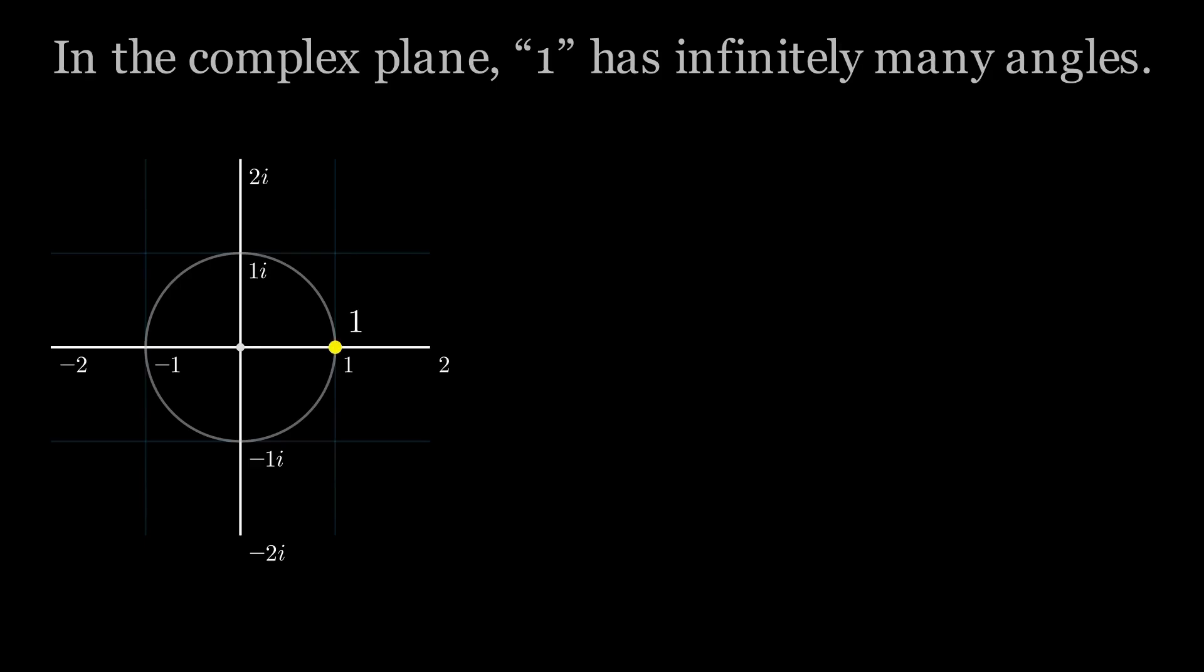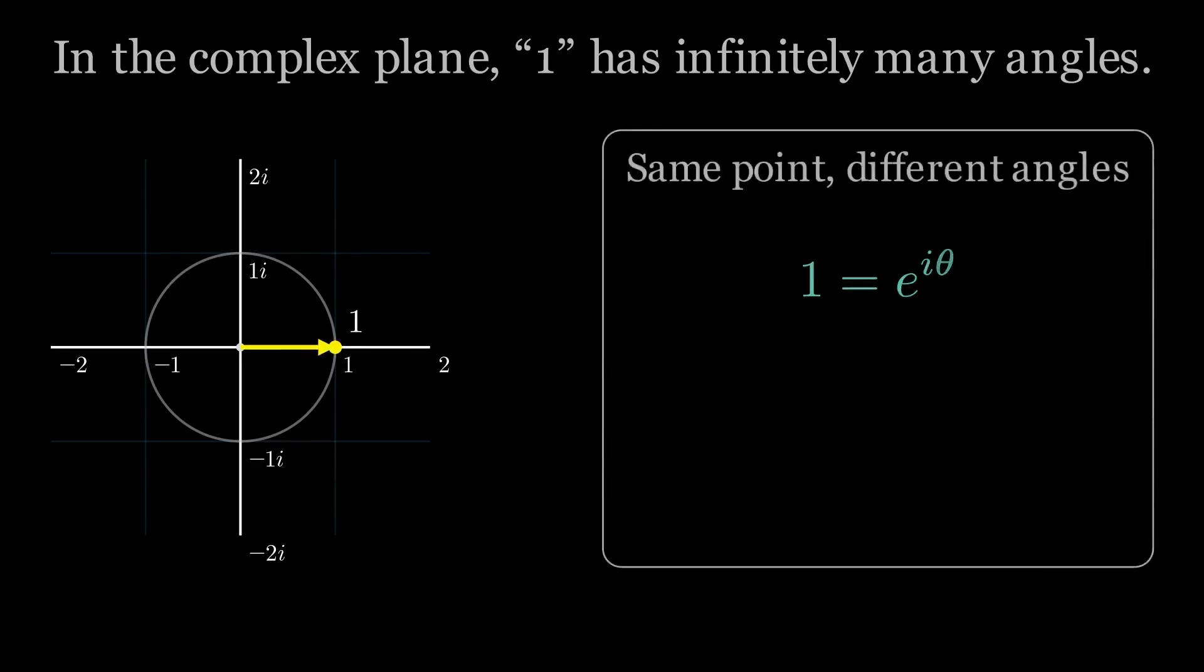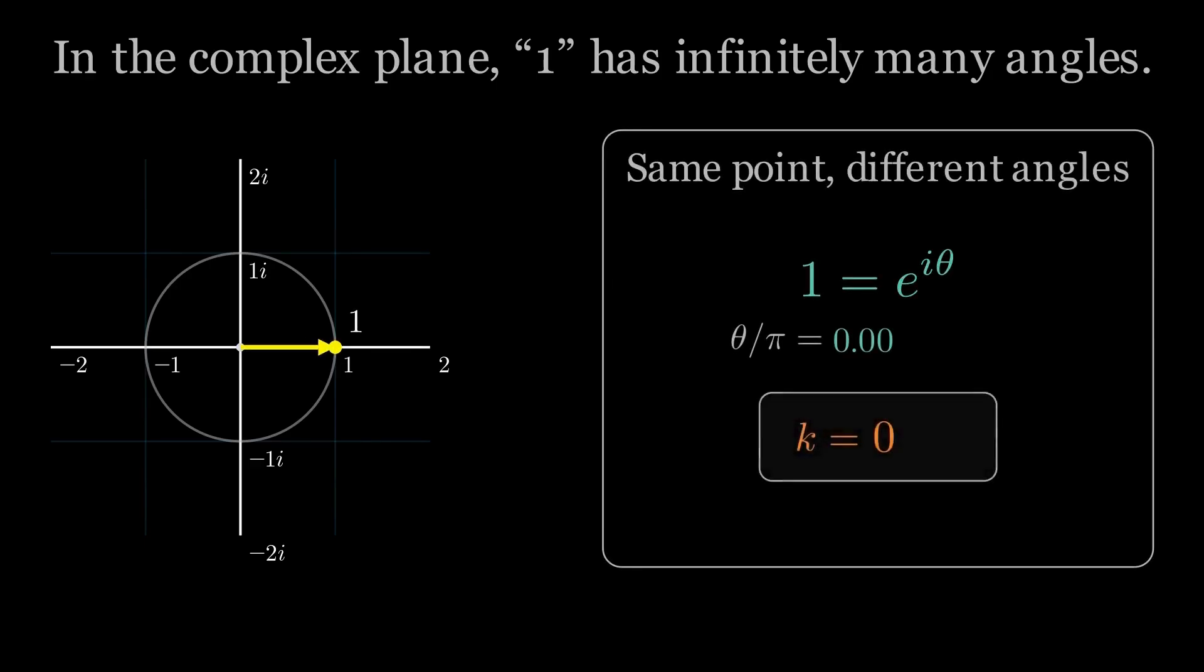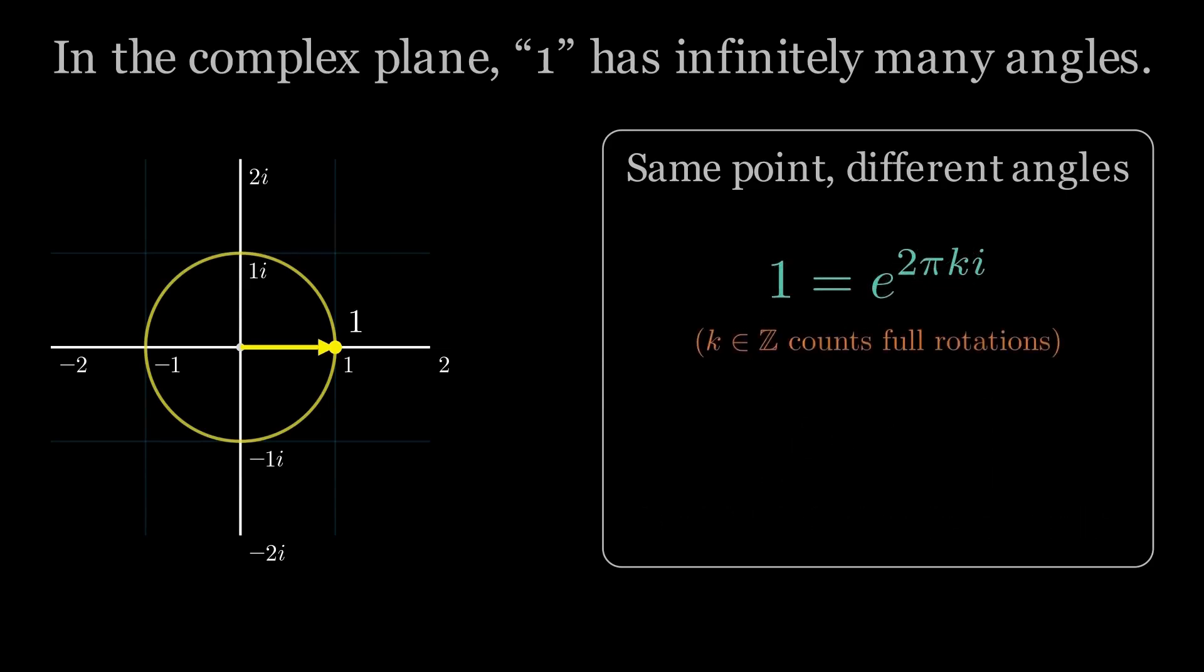In the complex plane, 1 has infinitely many angles. We can write 1 equals e to the i theta, rotate by 2π, you land on the exact same point, 1, rotate by 4π, still 1. So 1 isn't just e to the 0, it's 1 equals e to the 2πki, where k is any integer.